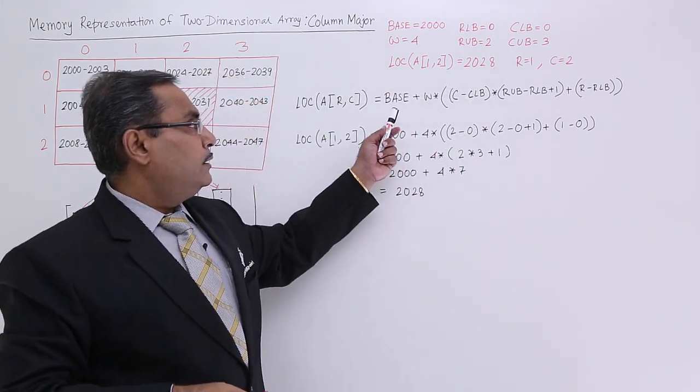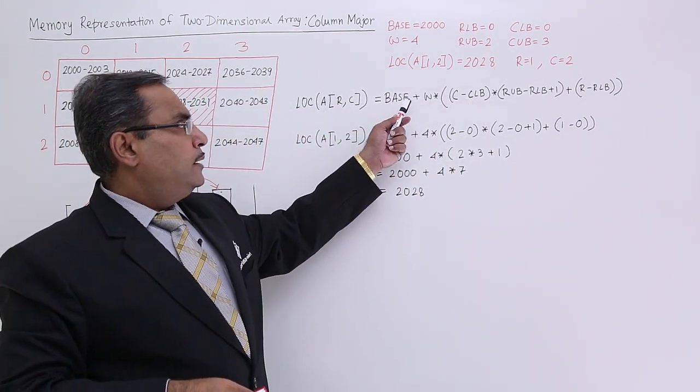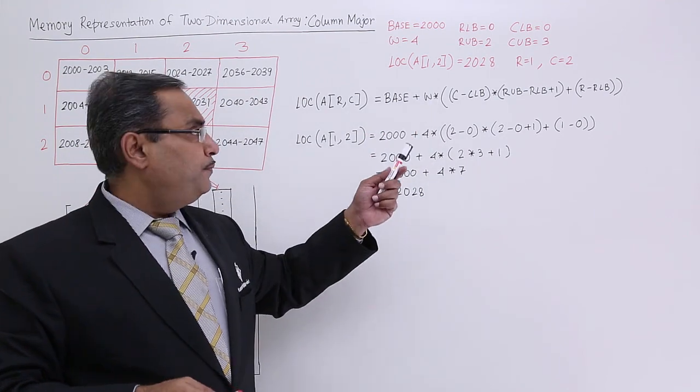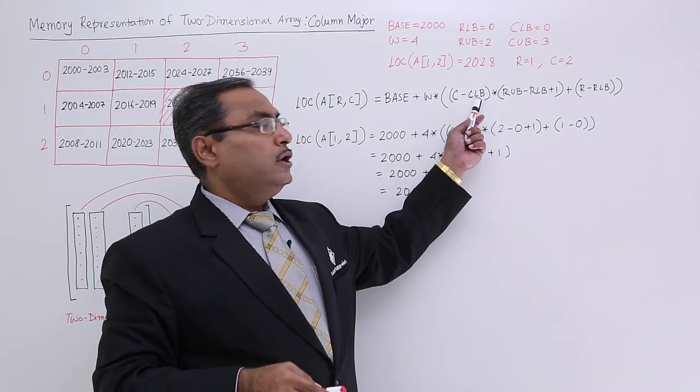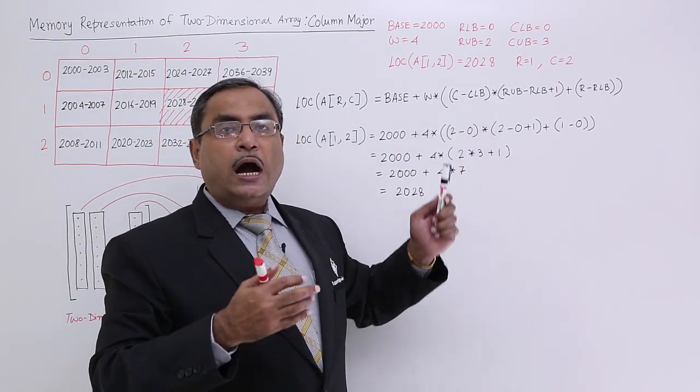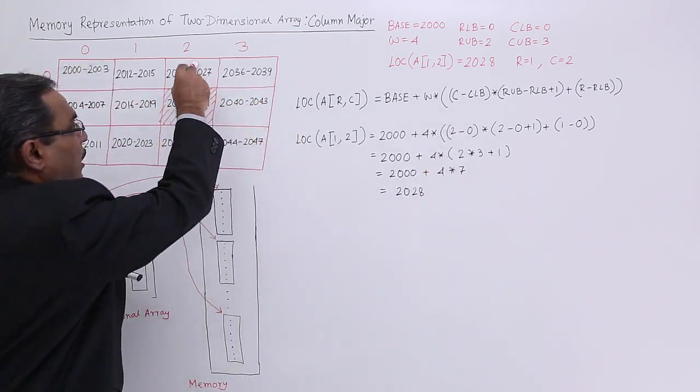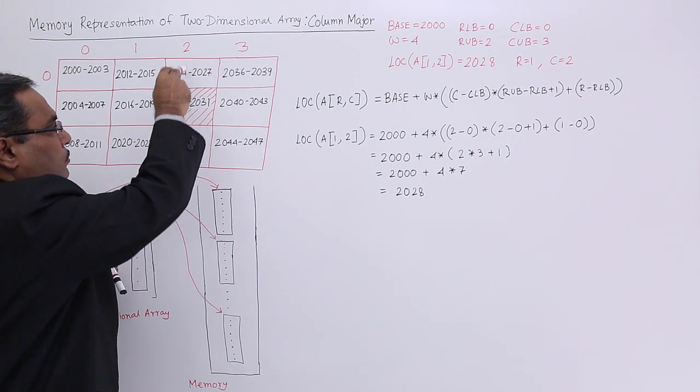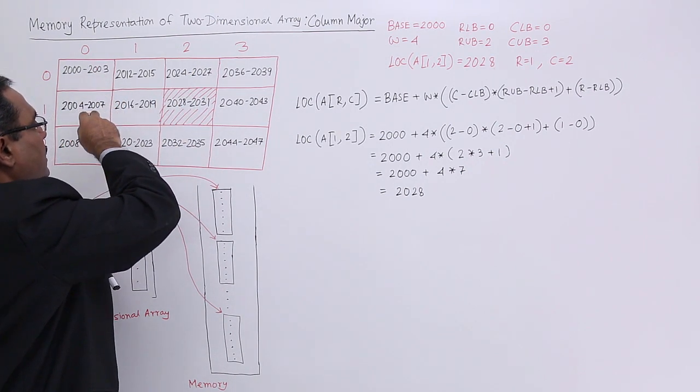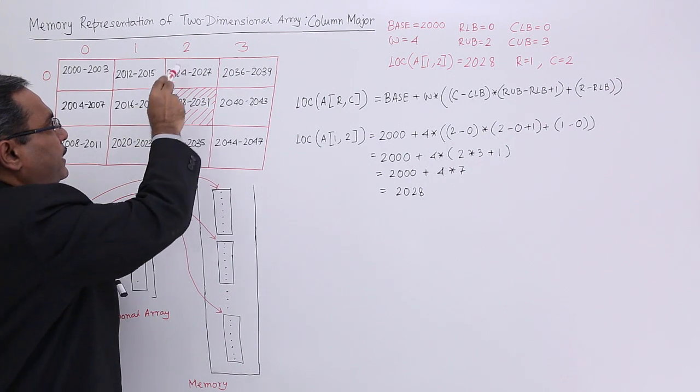So same thing I have done. There is base address plus W into C minus C lower bound. That means how many columns you are now? At which column you are now? So now we are having this column number 0, column number 1. So two columns we are having.